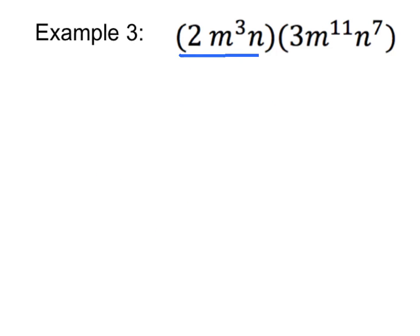In this first set of parentheses, what just that set of parentheses means is we're going to take the number 2 times m to the 3rd power times n to the 1st power. That whole parenthesis is being multiplied times everything in our other parenthesis. So I'm just going to continue writing times 3 times m to the 11th times n to the 7th.